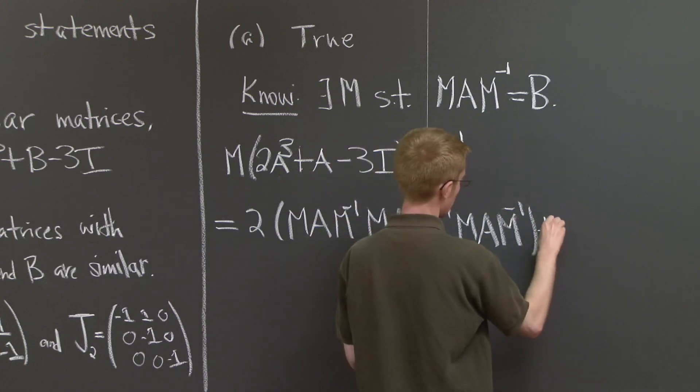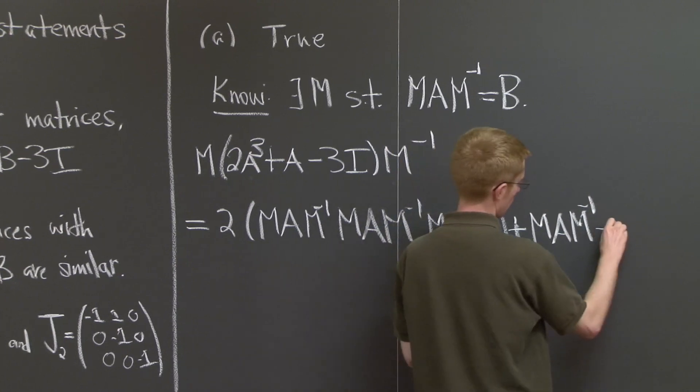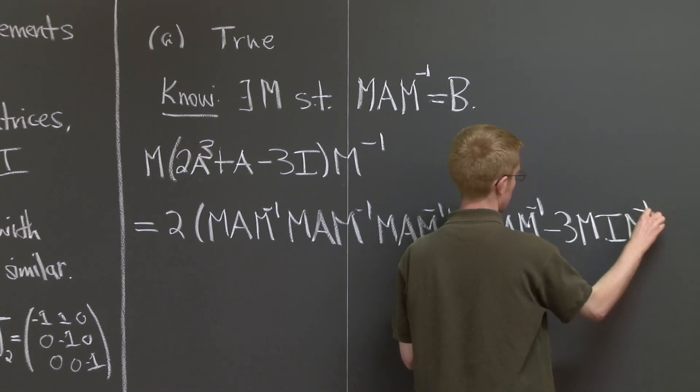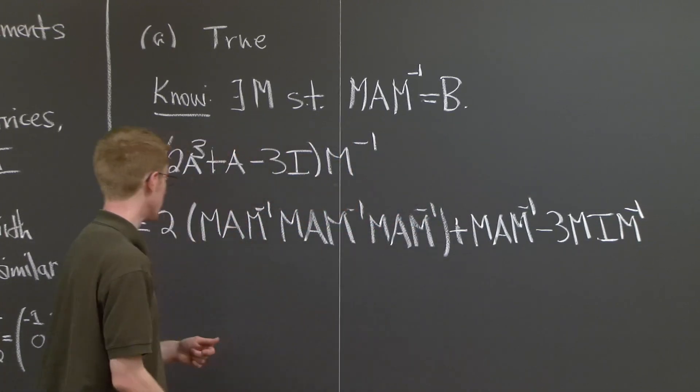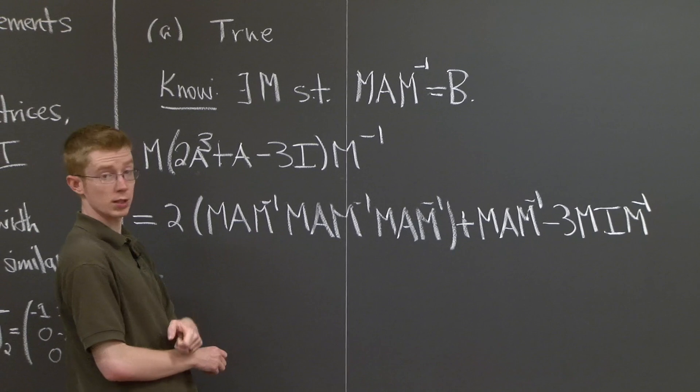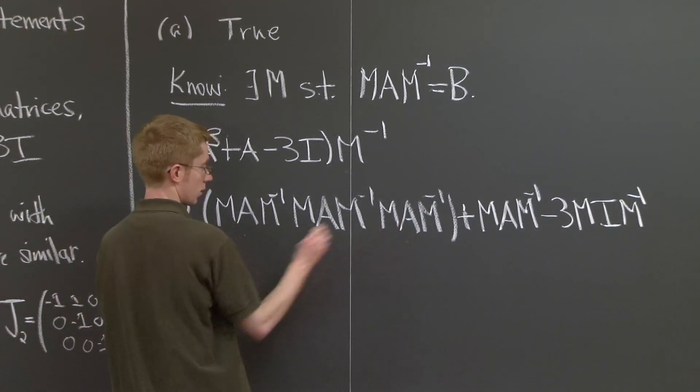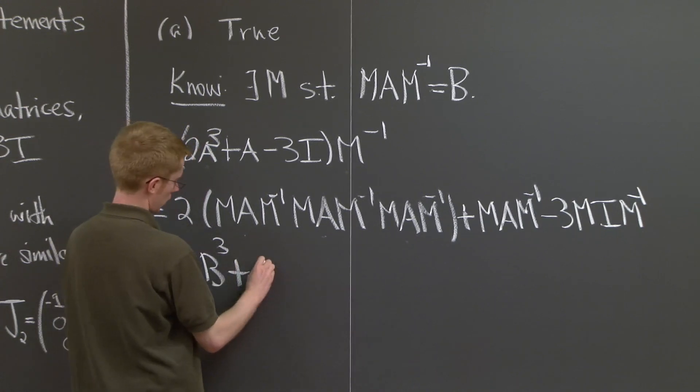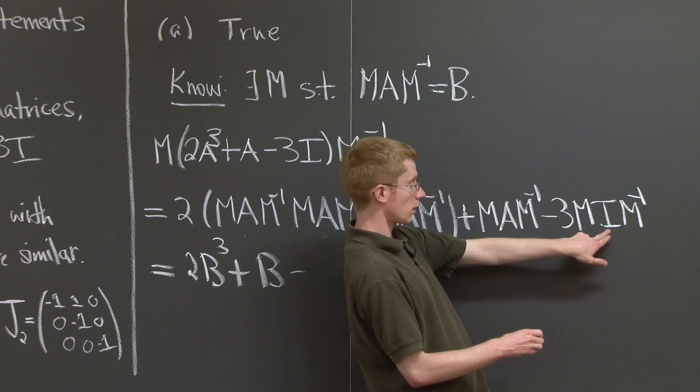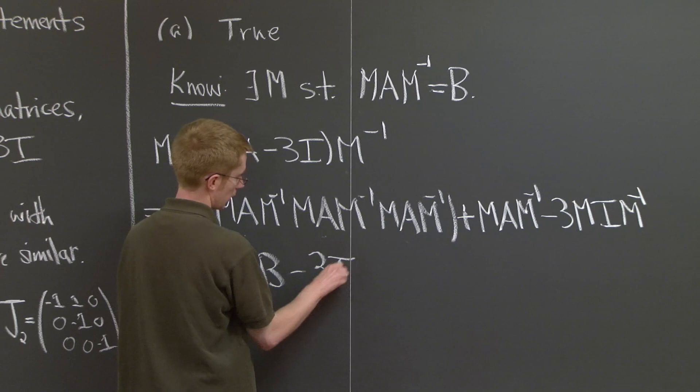Similarly, we have an M inverse and an M times the identity times M inverse. And so remember that M times A times M inverse is B, so we just get 2B³, plus B minus, well, M times the identity is just M, so we just get the identity back and we have 3 times the identity.